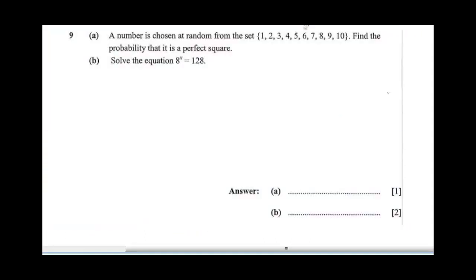Question 9 says, a number is chosen at random from the set 1, 2, 3, 4, 5, 6, 7, 8, 9, 10. Find the probability that it is a perfect square.